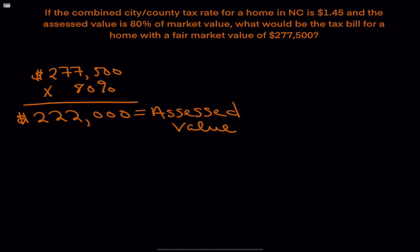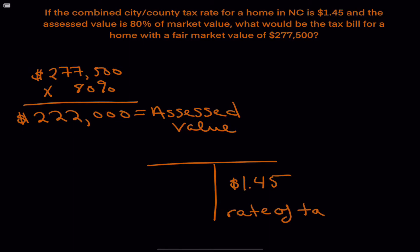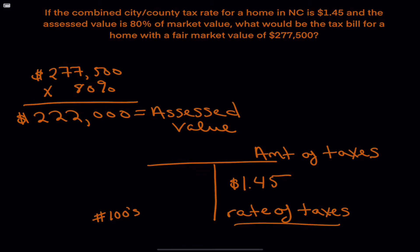Now we've got to find out what the tax bill is going to be. I'll use a T-bar for this, because I know some people struggle a little, and that's what these videos are for. The first step is to make a T-bar. The easiest thing to put in a T-bar is a rate. We've already used the 80%, so the other rate we have is our tax rate: $1.45. That is our rate of taxes, and up top we're going to write the amount of taxes.